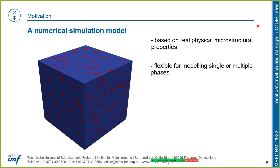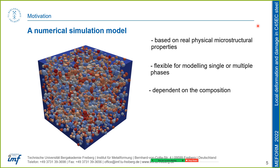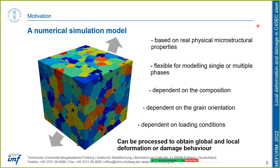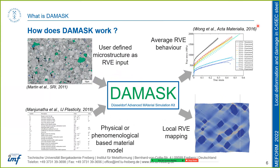We want our material model to be flexible for modeling single or multiple phases, dependent on composition, dependent on grain orientation, and dependent on loading conditions such as tension, compression, or multiple loading conditions. Once we get our data, we want to process it to obtain global or local deformation or damage behaviors. DAMASK — the Düsseldorf Advanced Material Simulation Kit — provides a very interesting solution for these kinds of problems. It is a crystal plasticity based material model flexibly developed to accept user-defined microstructures as RVE inputs.